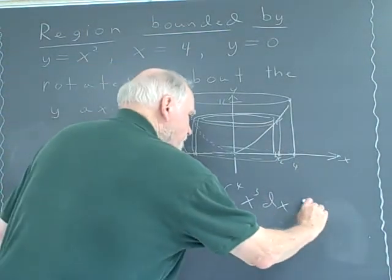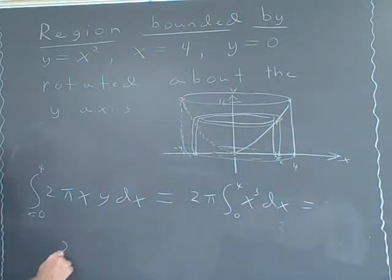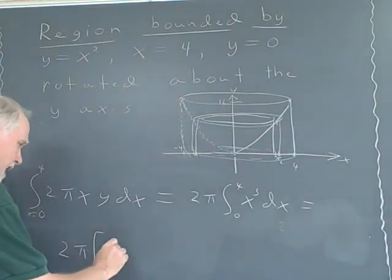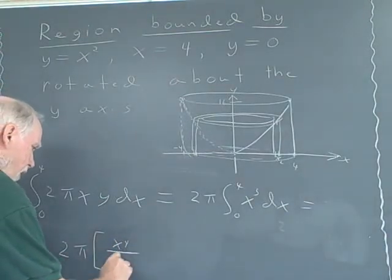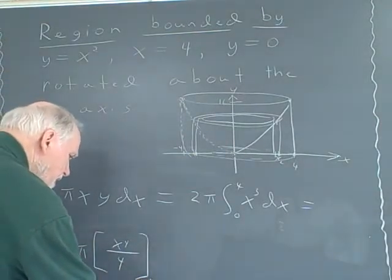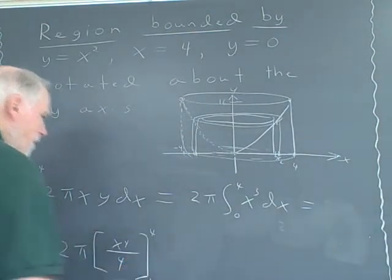And, of course, we know how to do this, right? I can just write this as 2 pi, I'll use square evaluation brackets, x to the fourth over four, evaluated from x equals zero to four.